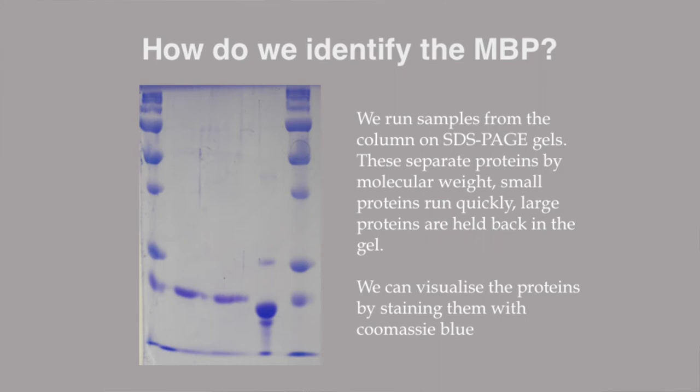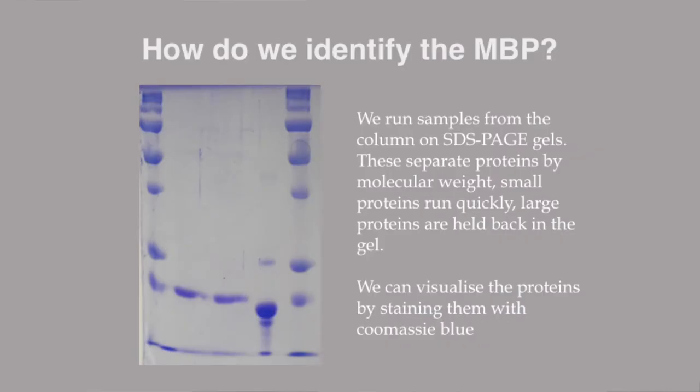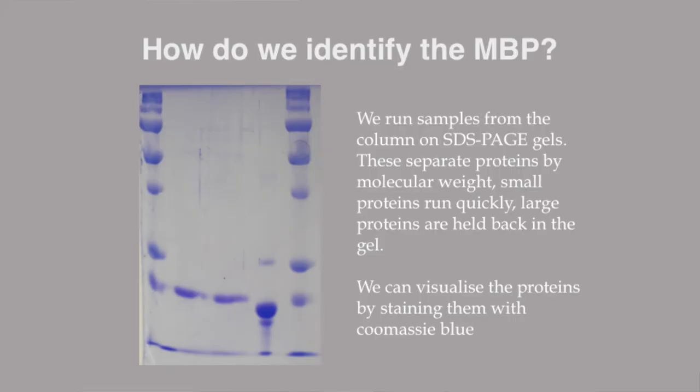The main way that we identify MBP is using SDS-PAGE gels, which is essentially a process that allows us to separate our proteins by molecular weight. Along the sides of the SDS-PAGE gel you can see a ladder to compare against. In the three signals on the left we have our wild-type MBP, in the middle we have our modified MBP, and on the right we have our bovine MBP. It turns out our MBP is actually more pure than the bovine MBP, which is always nice.